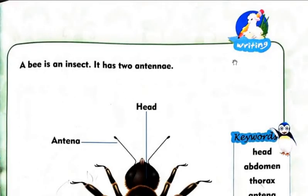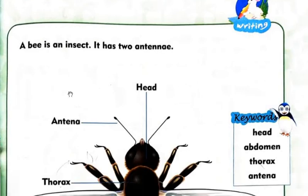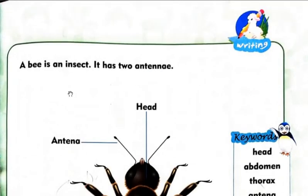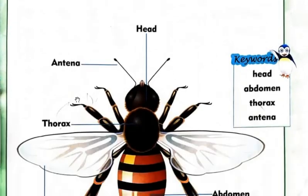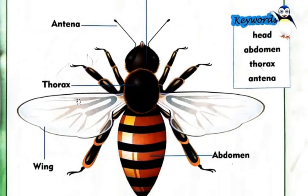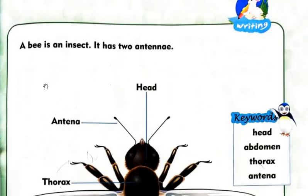This is your book page number 25. And here you have to learn the body parts of — sorry, bee. You have to learn the body parts of bee. Let me do reading for you.